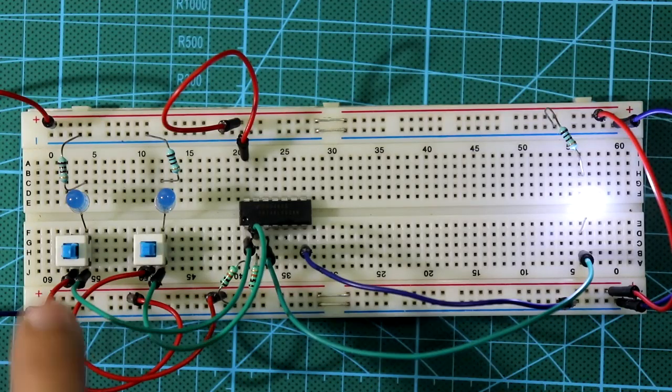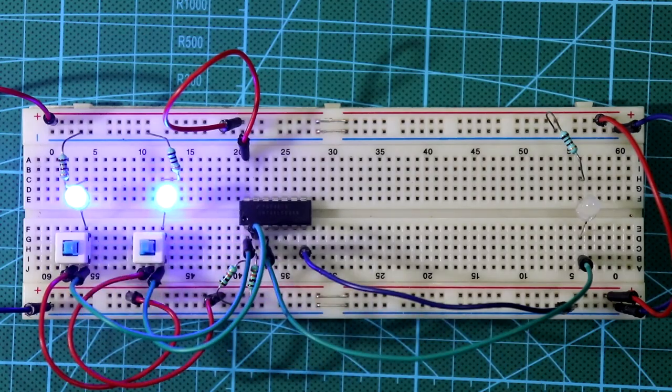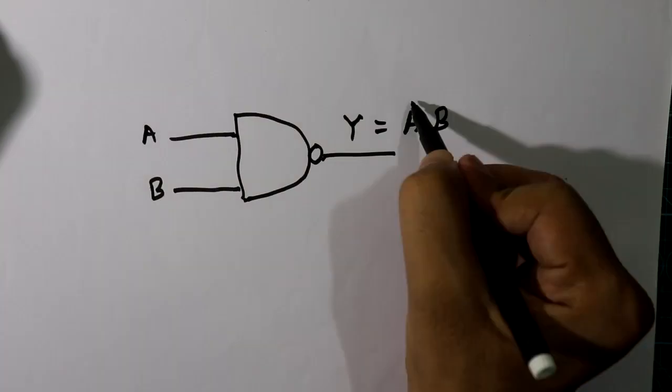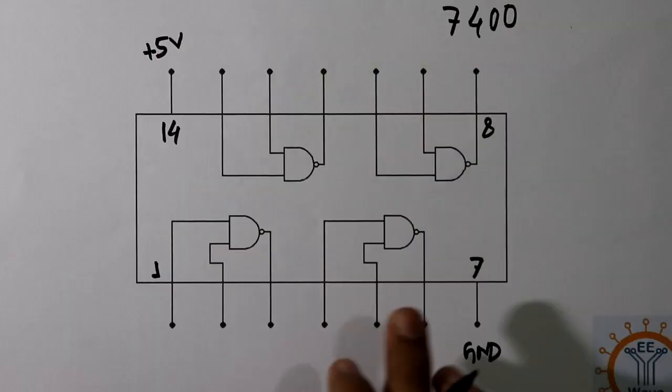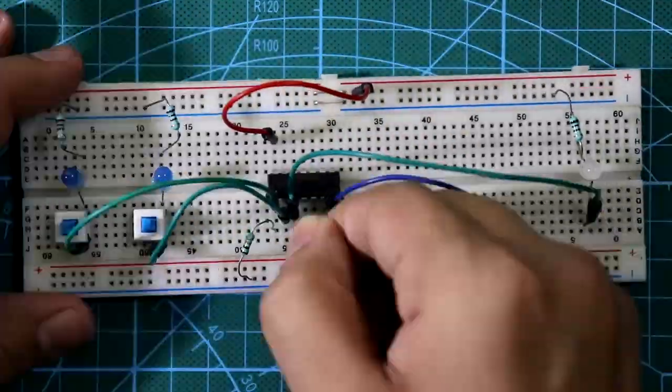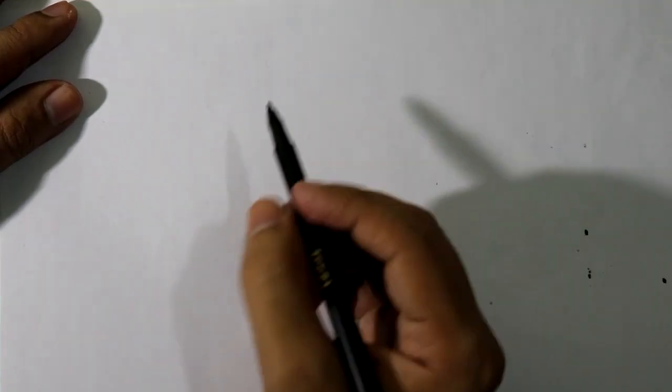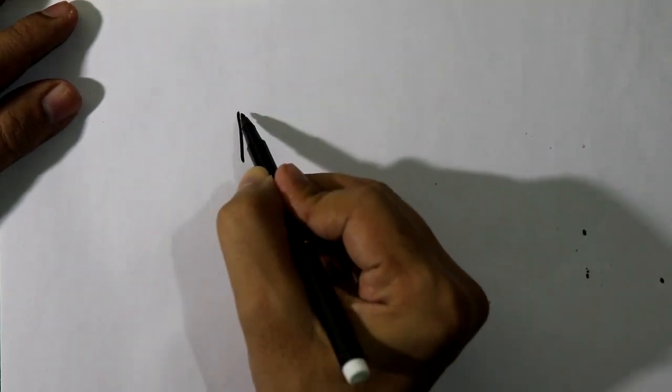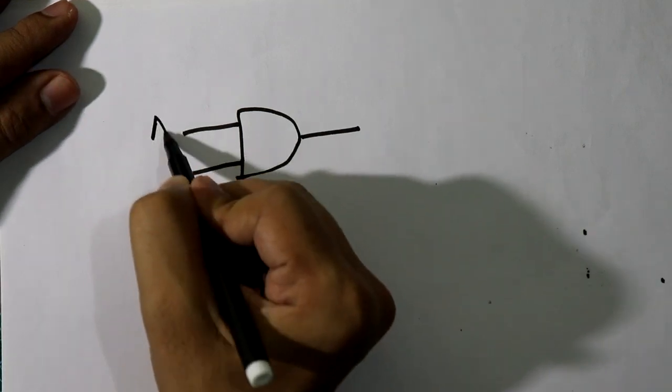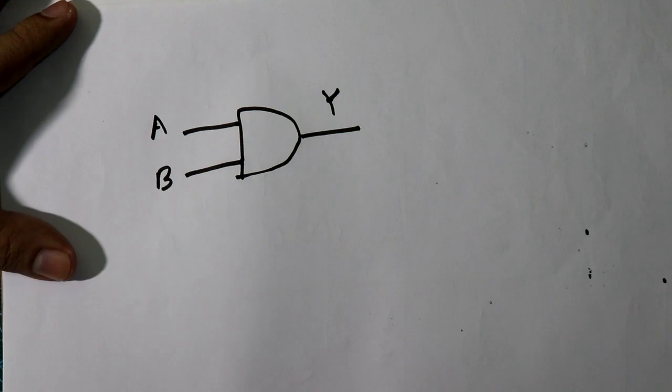Hello guys, today we will see NAND gate IC 7400, so let's get started. The symbol of AND gate is like this, right? It is A, it is B, and this is Y.